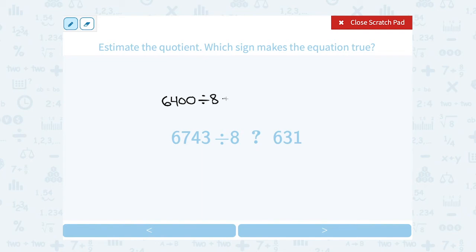And again, the reason I'm picking this number is because I can easily say, well, 8 goes into 64 eight times. Well, this has two more zeros than 64, so I'm going to put two more zeros on my answer. So 6,400 divided by 8 gives me 800.